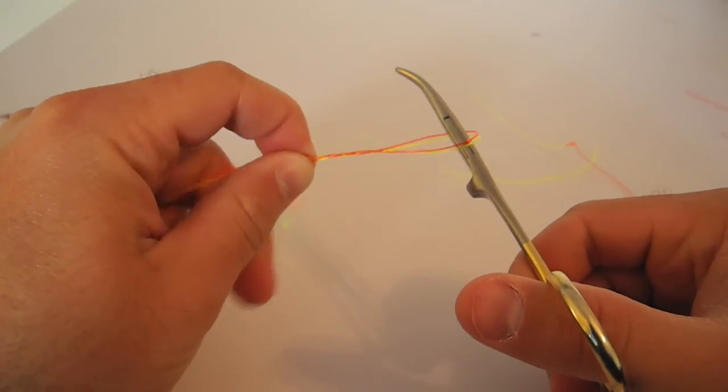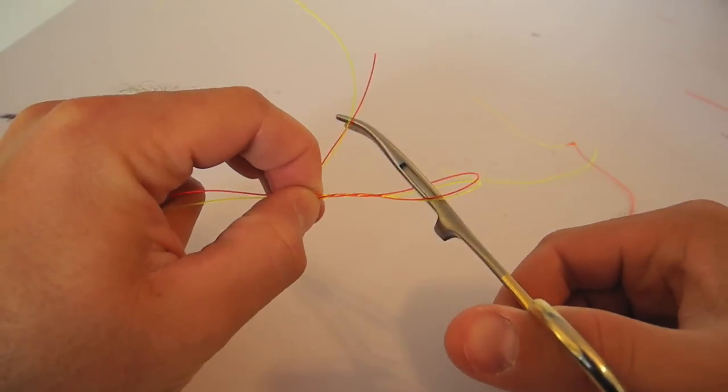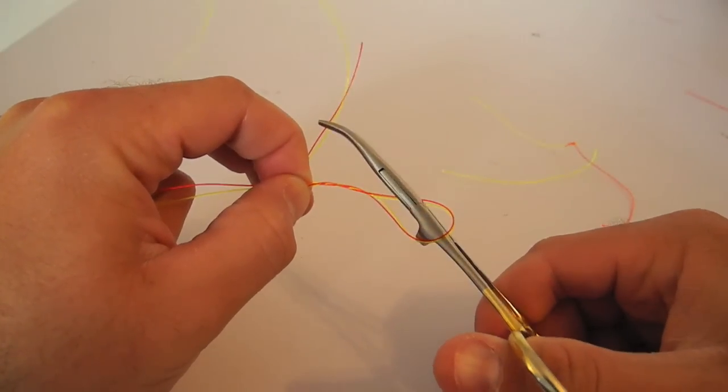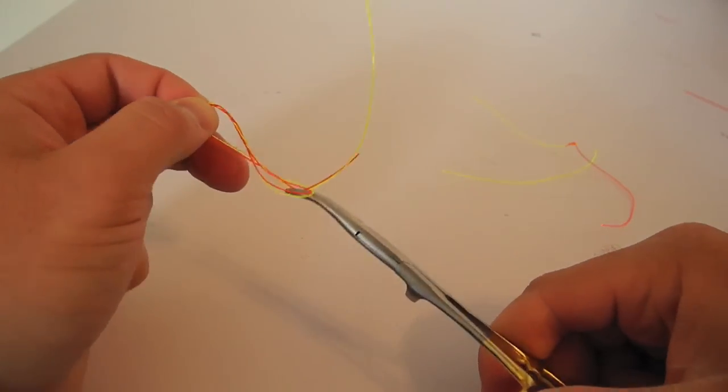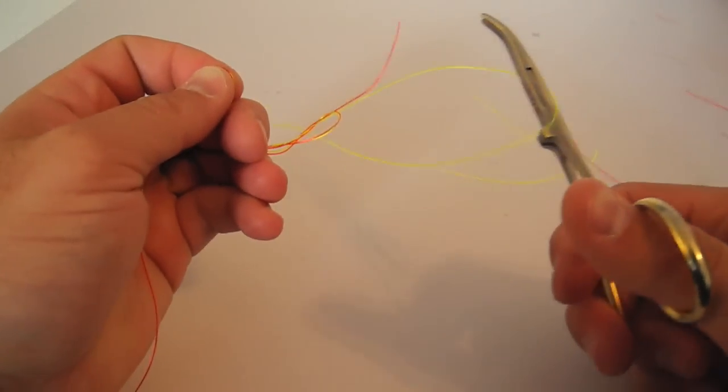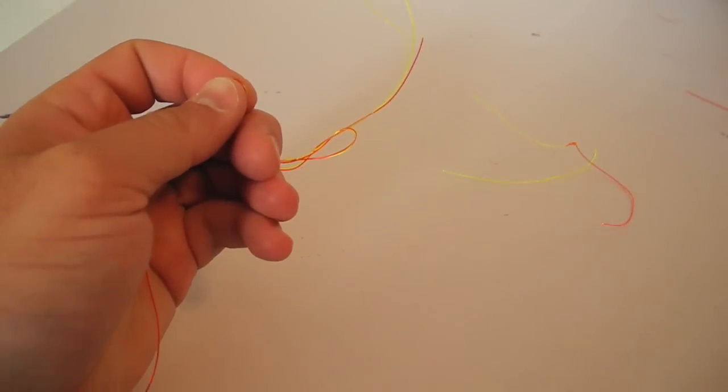Then what you're going to actually do is reach around and grab your tag end to your leader and your tippet going to your fly, and you're going to just pull it through that loop and pull the tippet all the way through that loop.